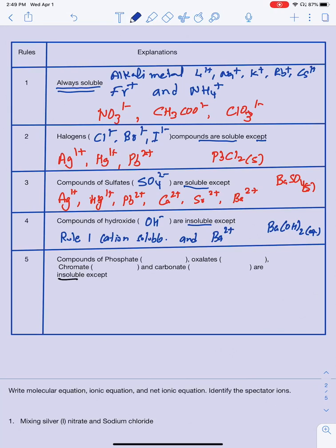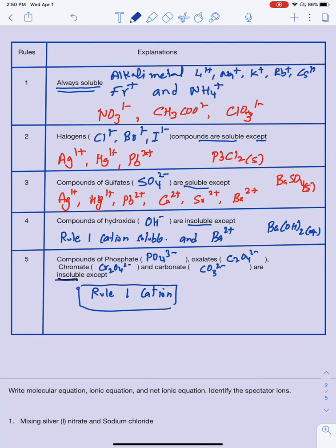Rule 5: phosphates (PO4 3−), oxalates (C2O4 2−), chromates (CrO4 2−), and carbonates (CO3 2−) are insoluble, except when bonded with Rule 1 cations — alkali metals and ammonium. Any time those anions are paired with Rule 1 cations they will be soluble; bonded with any other cation, they will be insoluble in water.